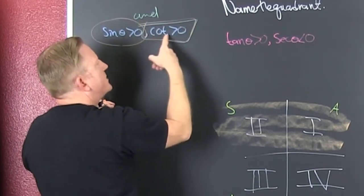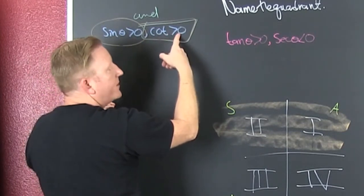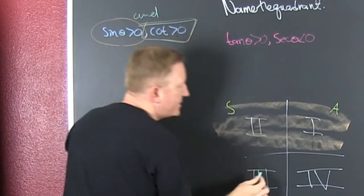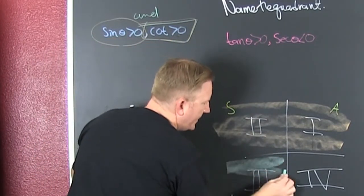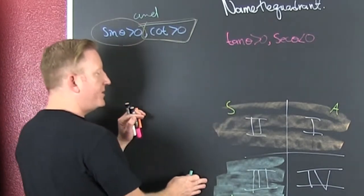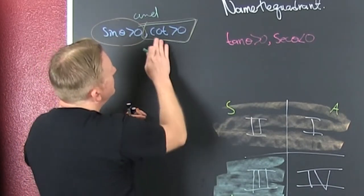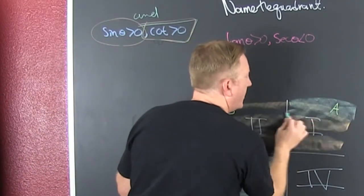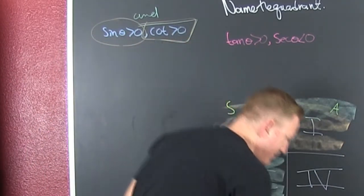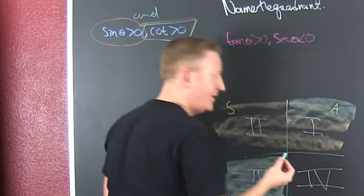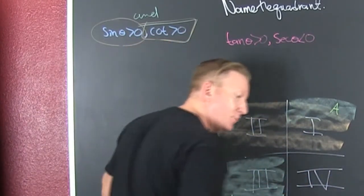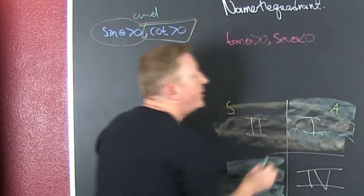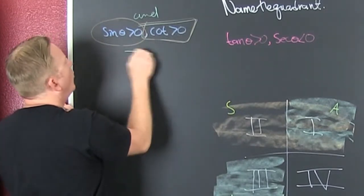We are looking for 'and.' So cotangent greater than zero is the same as tangent greater than zero. The tangent is sine over cosine, so tangent is greater than zero here in quadrant three because both coordinates are negative, and cotangent is also greater than zero in quadrant one where all are positive. Where do those overlap? Those overlap in quadrant one.